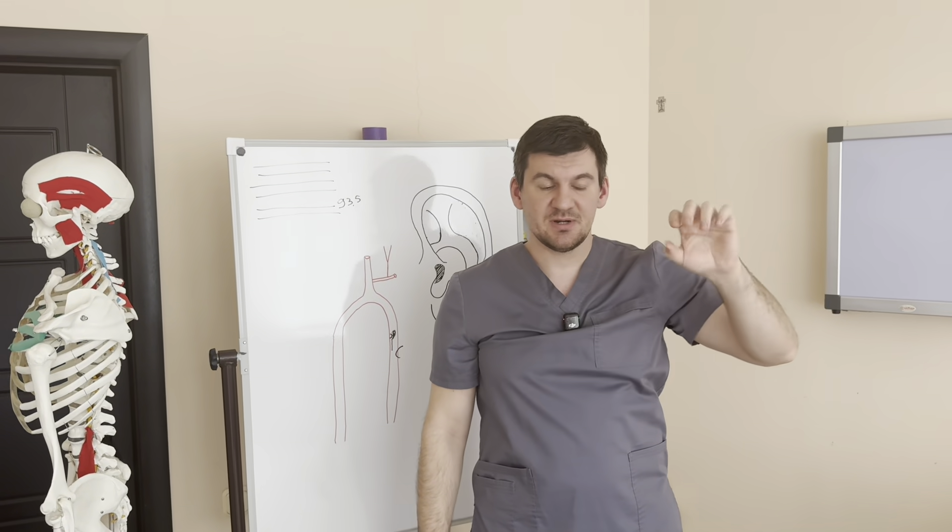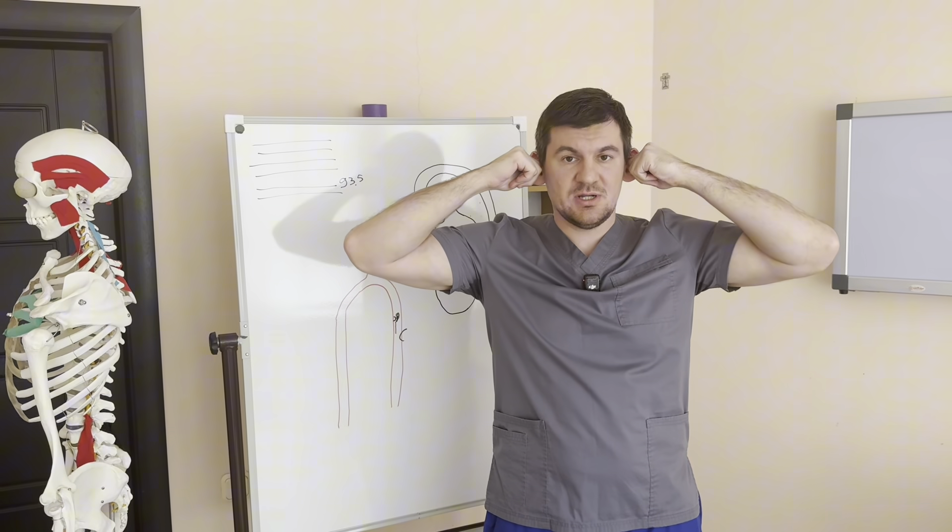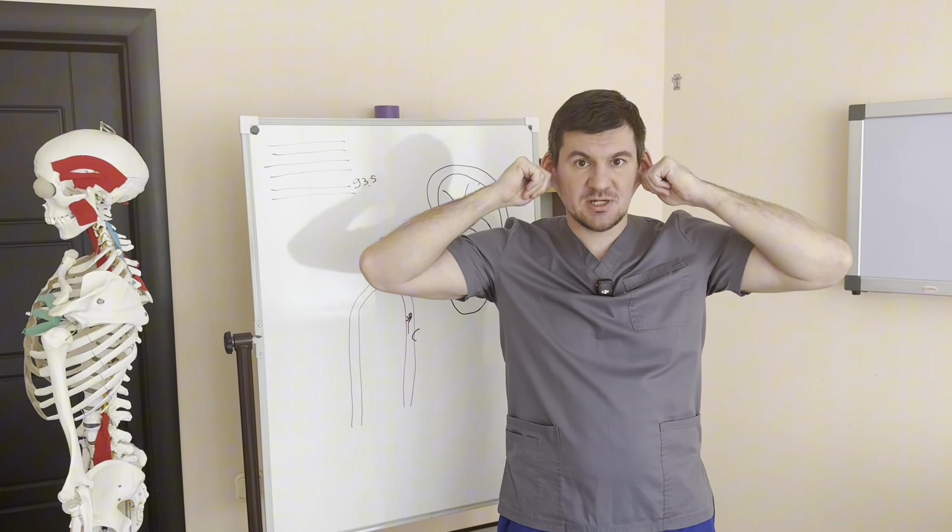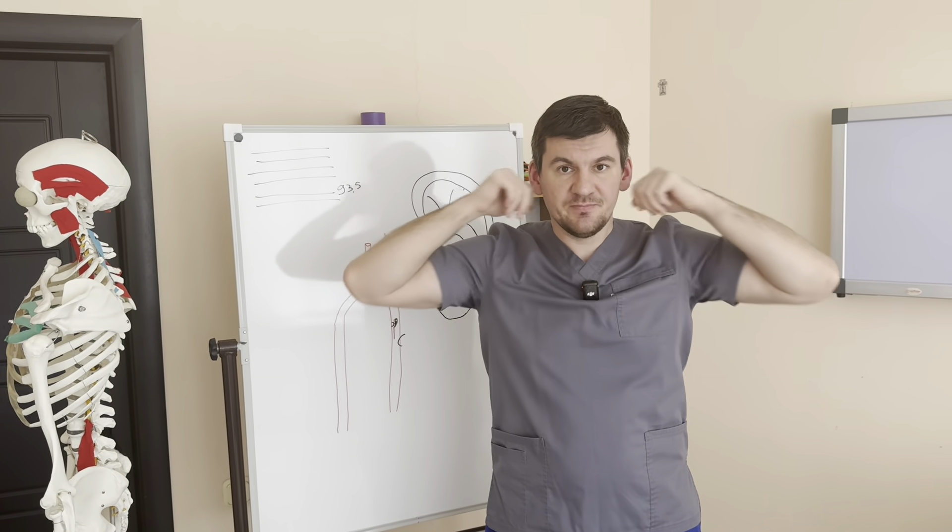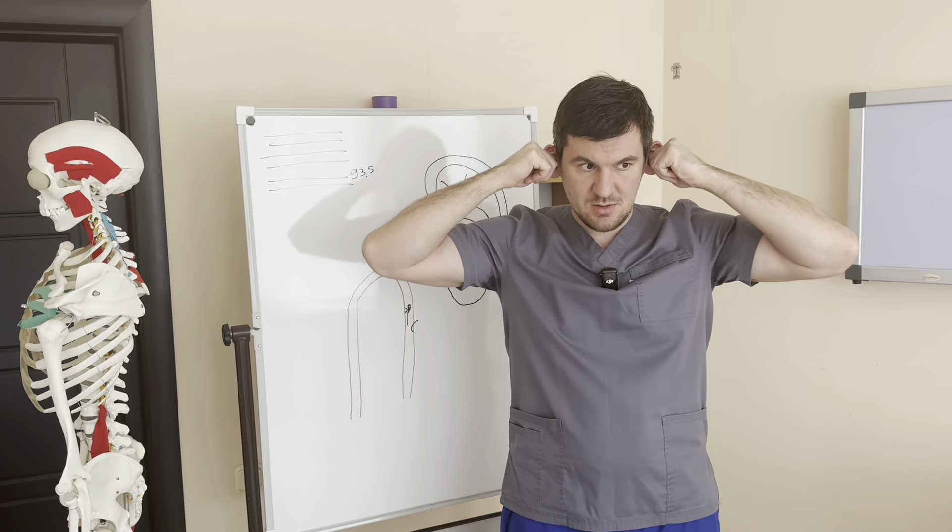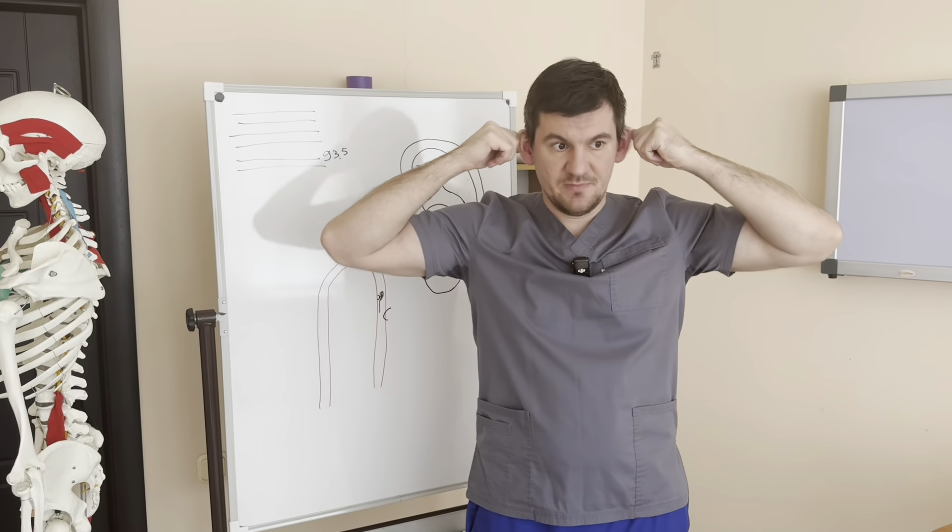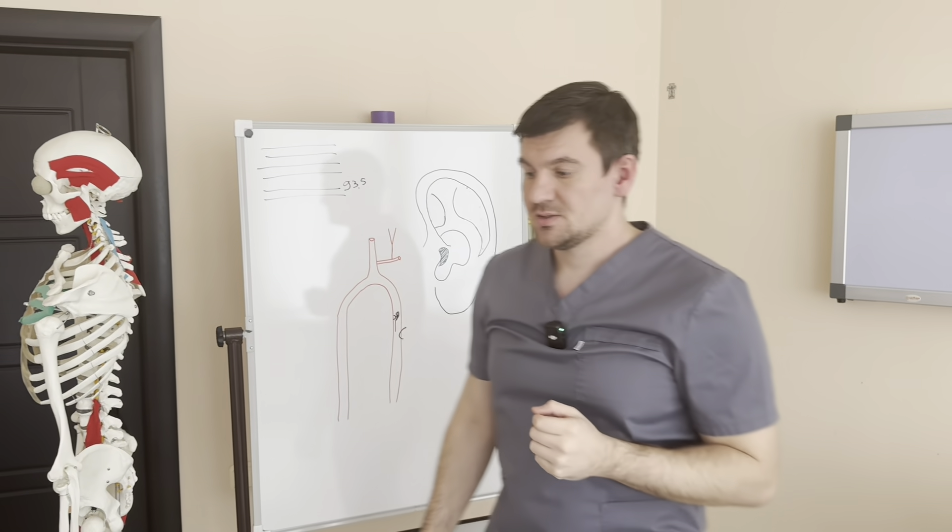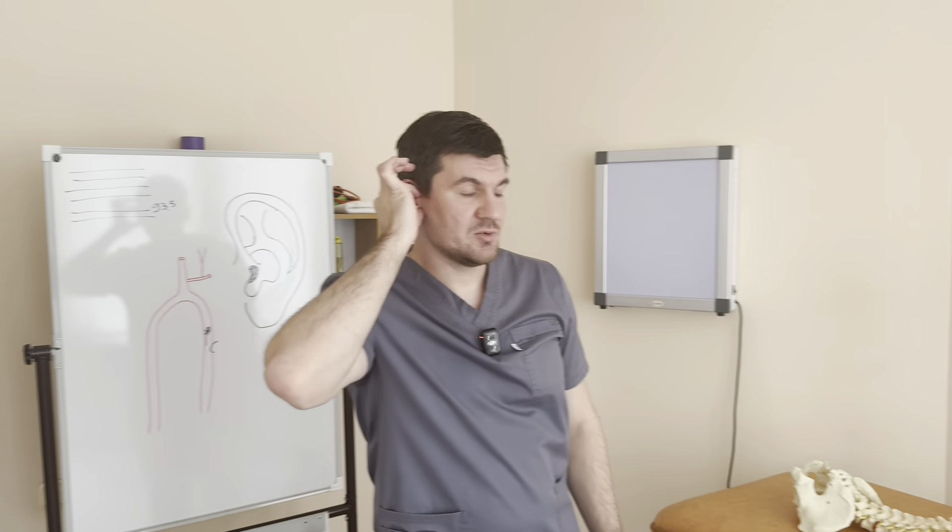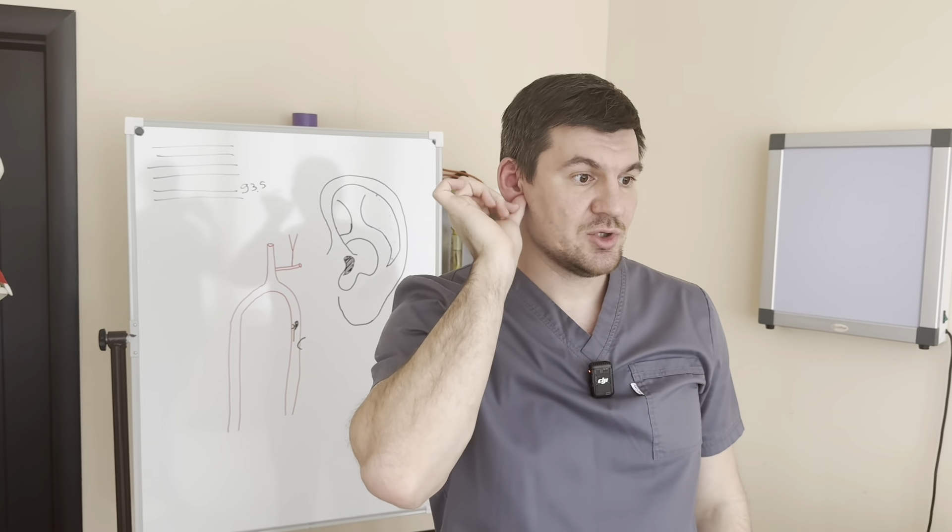And your task is to slightly pull this outer auditory passage forward - in other words, mobilize it to move in all directions. That is, you pull yourself by the ear - pull the middle part, pull, relax, pull, relax. Then pull by the earlobe - pull, relax. Then pull to the side like this. The ears do not enlarge from this, don't worry. Now you also pull the upper part. Now look, this simple movement will not cause you any problems, right?